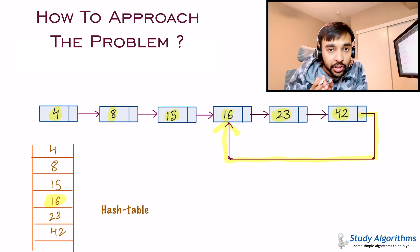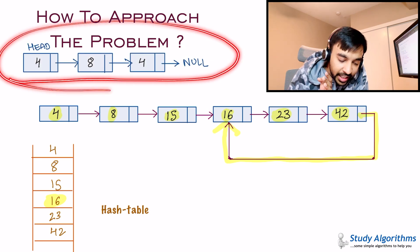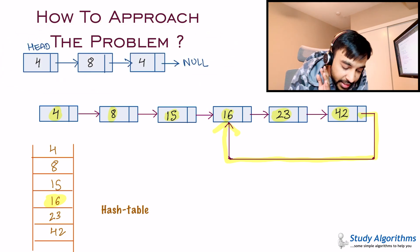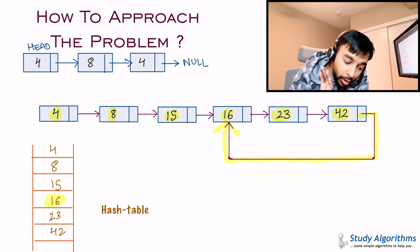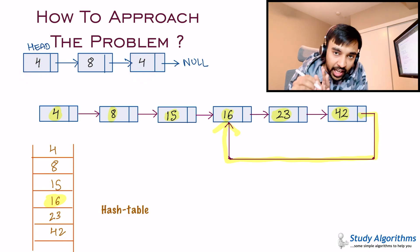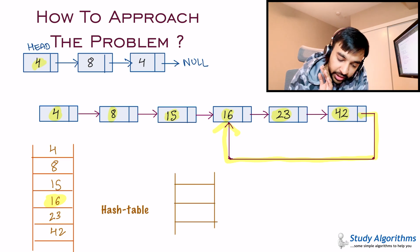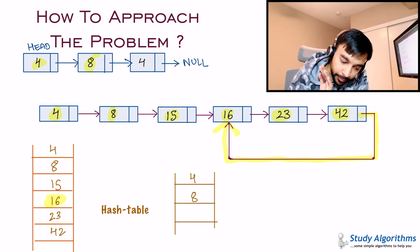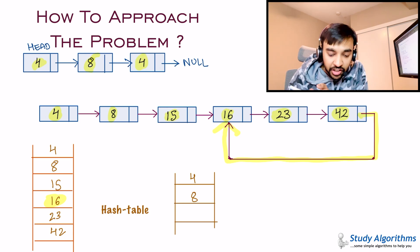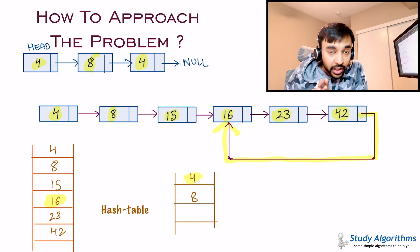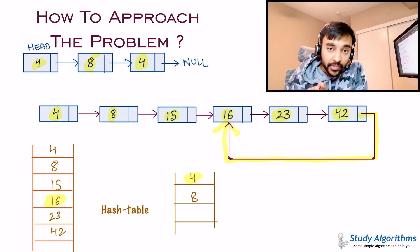But this solution will fail if you have a list that has duplicates. In this list, the element 4 is repeated. If you try to create a hash table, you see value 4, add it, then 8, add it, then 4 again — you see it's already present. Does that mean this list has a loop? No. This list does not have a loop. So this method will fail if your linked list has duplicates.